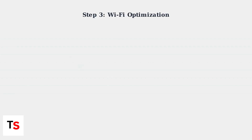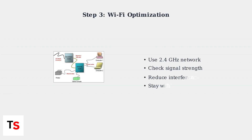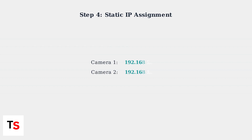For wireless cameras, ensure they are within your router's range and connected to a 2.4 GHz network. This frequency provides better range and penetration through walls than 5 GHz. Assign static IP addresses to your cameras to prevent IP conflicts, ensuring each camera has a permanent, unique address on your network.